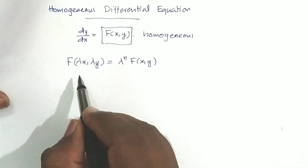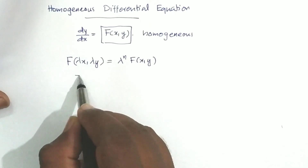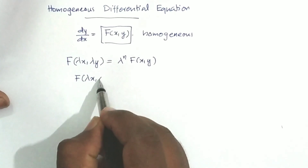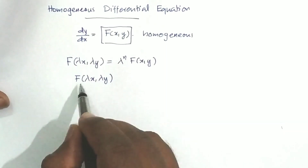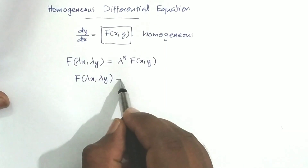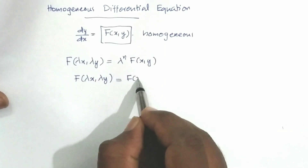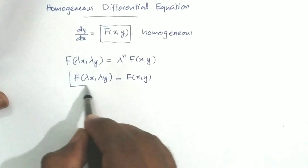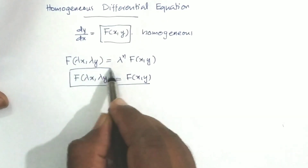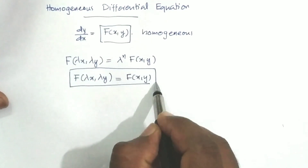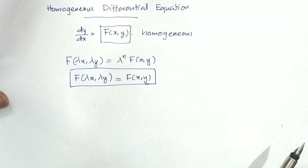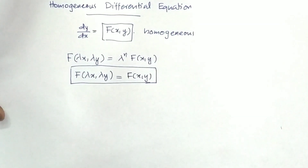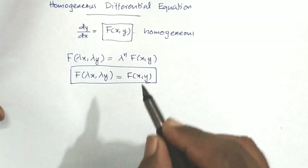This function is a homogeneous function of degree 0. That means f(λx, λy) equals f(x, y). This function is homogeneous.